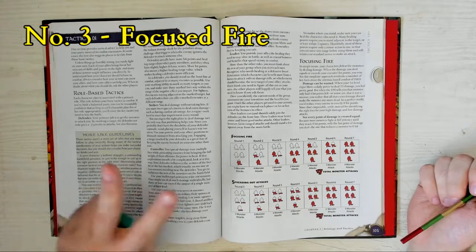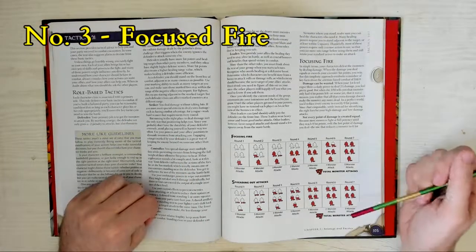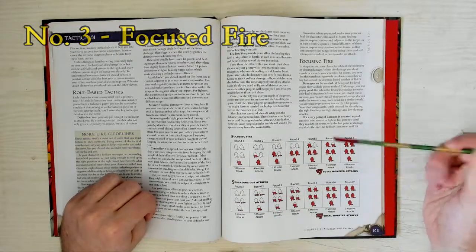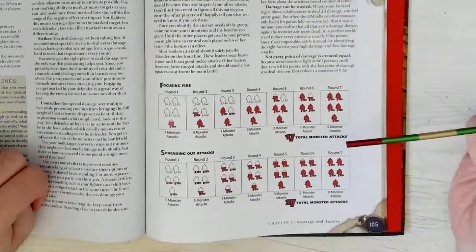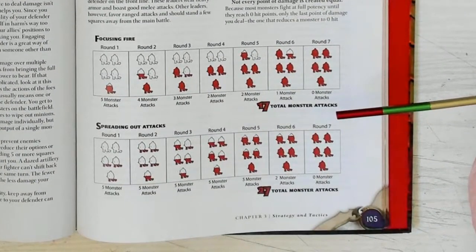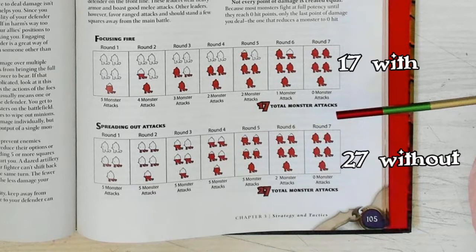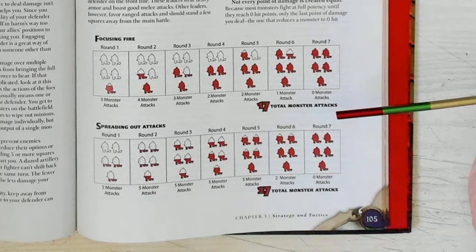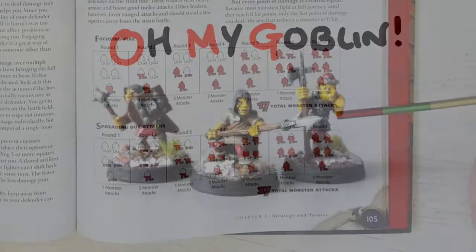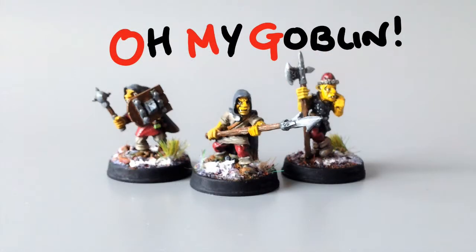Number 3. Focus Fire. The diagram illustrates the benefits of the entire party focusing on one enemy at a time. Even though it lasted the same number of rounds, the difference between Focus Fire and Spread Out in this example is like 10 extra attacks. Focusing Fire reduces the potential for incoming damage by reducing the number of opponents earlier on. The major problem with Focusing Fire is though it's a sound game strategy, it's utterly unrealistic roleplay-wise. We're all going to hit this one guy until he dies. What about his mates? Just ignore them. Uh huh.